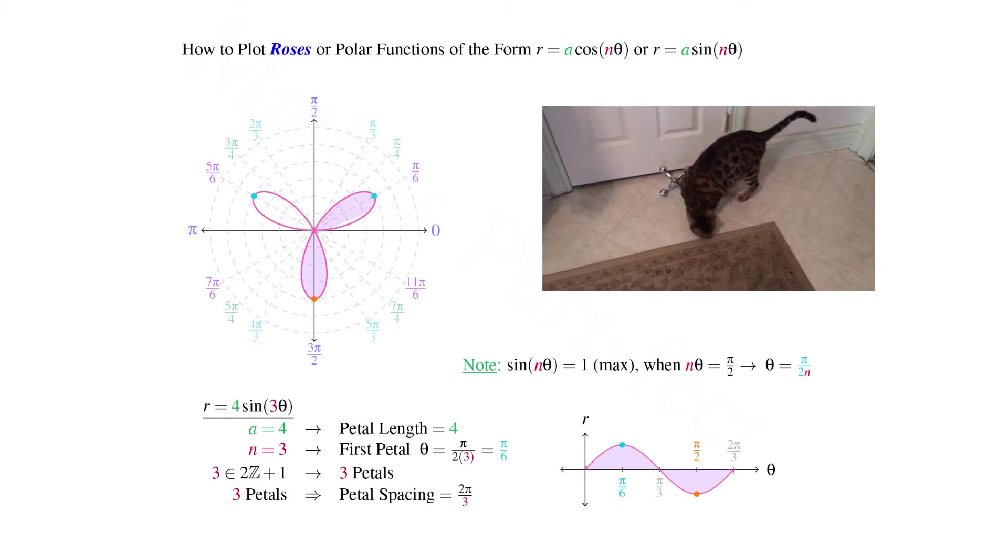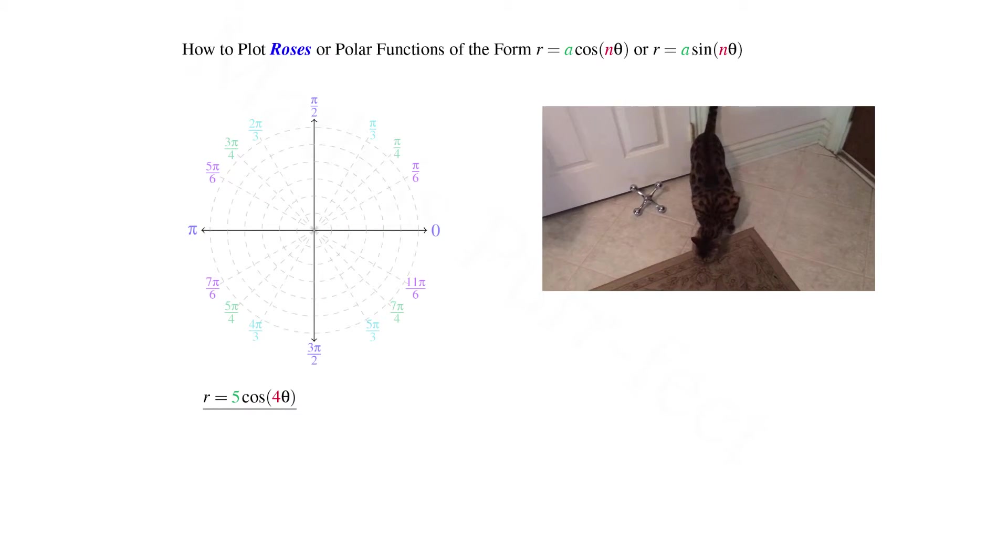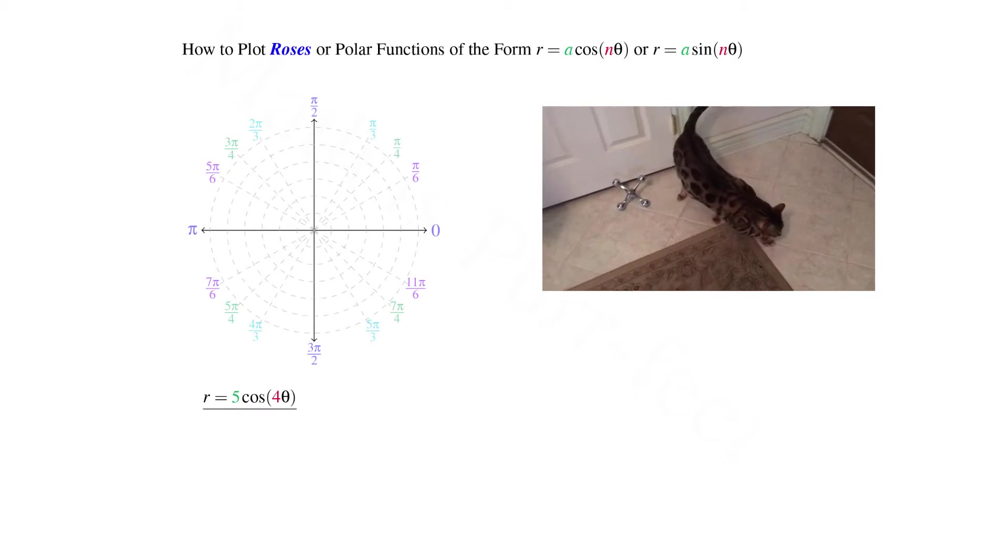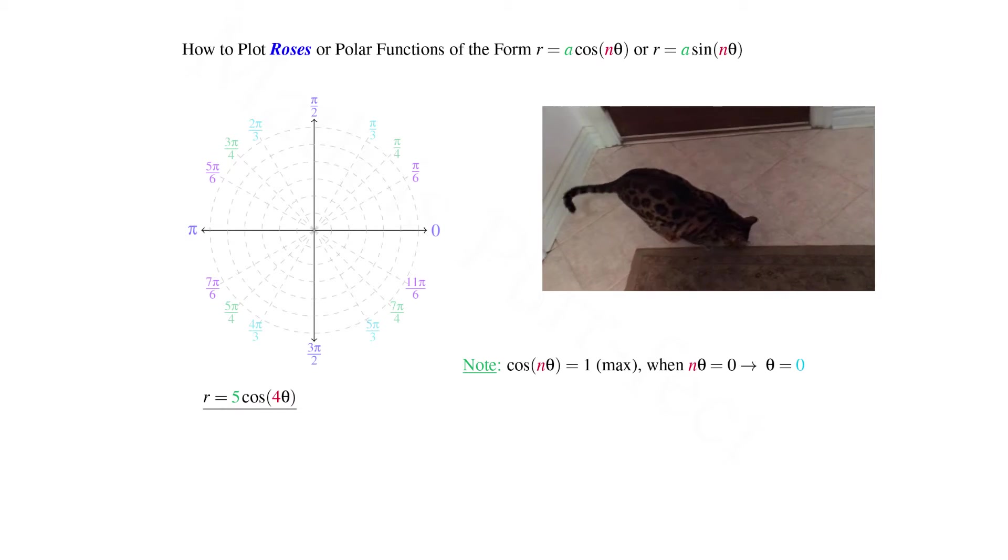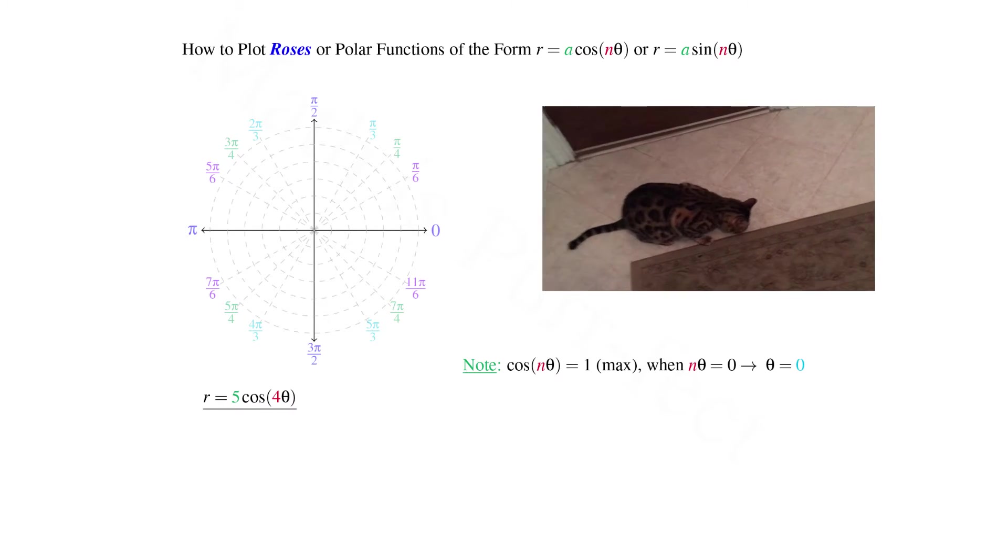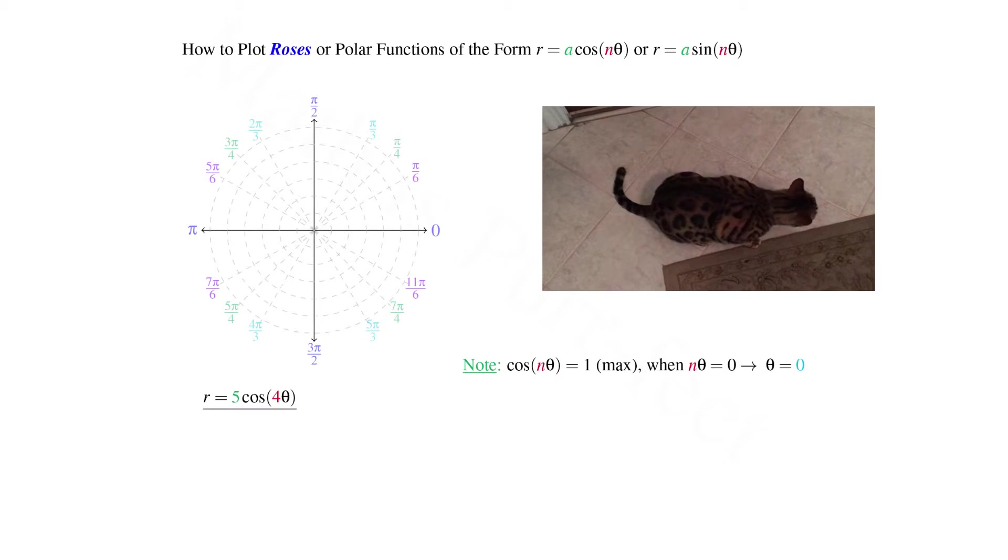Let's move on to the plot of a rose involving cosine. Let's consider the function r = 5cos(4θ). We note that cosine is maximized at 0 radians, hence the argument nθ must equal 0, which implies θ itself is 0.